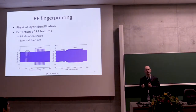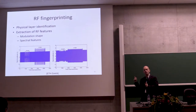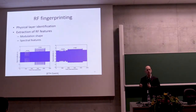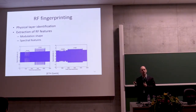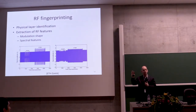If you take several devices of the same model, there will be very small differences — maybe a resistor value that's slightly different or a component placed a little differently. You can see these differences at the physical layer signal and extract features to identify which specific device is sending, with accuracy around 80-90%. So even if you have protection on higher layers and want to protect privacy, you still have a problem at the physical layer.